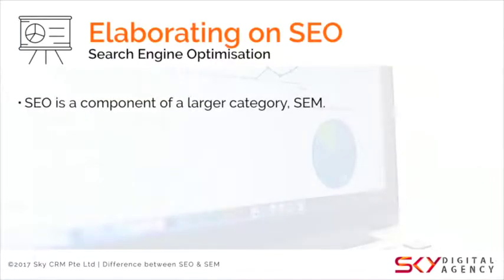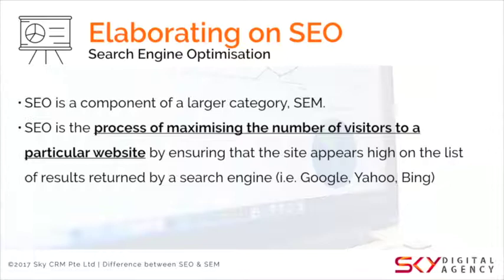Elaborating more on SEO: SEO is a component of the larger category SEM. It's the process of bringing more visitors to your website using keywords and key content — what people are looking for — so you create content to drive traffic and let people know about your business. For example, we might write an article about how visual content marketing helps businesses communicate better, then mention our workshops on infographics.